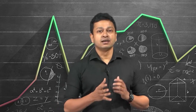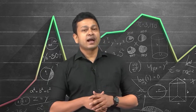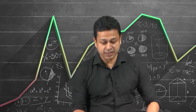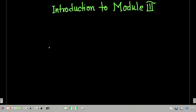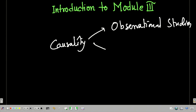This module is going to be two weeks — this week and the coming week. We will talk about causality mostly in two types of research: observational studies and in experiments.